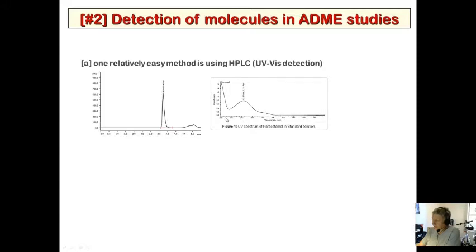Different molecules absorb UV-Vis light, especially aromatic compounds. The wavelength spectrum shows around 243 nm is the lambda max — the maximal absorbance of this molecule. We tune the detector to this wavelength, or more generally around 250–254 nm, which is a standard lambda max. The absorbance of ultraviolet radiation is what gives us this type of analysis.